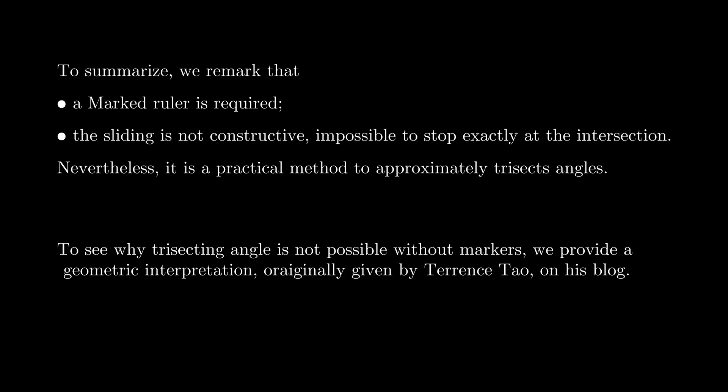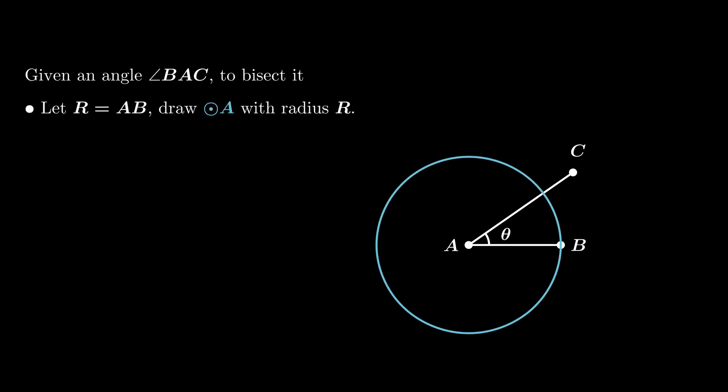We know that angle bisection is doable, so let's start with it. Given an angle BAC, we bisect it as following. We draw the circle with center A, radius AB, intersecting AC at point D.